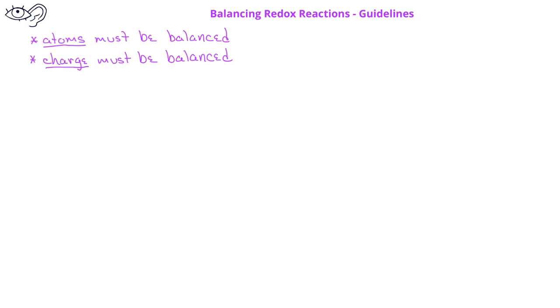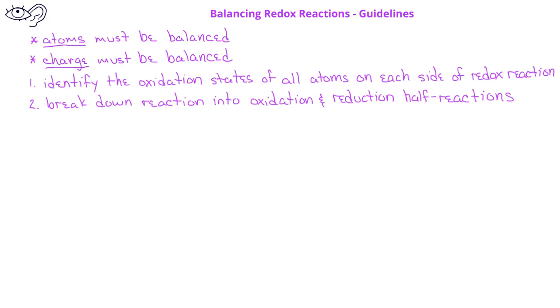When balancing redox reactions, you should begin by identifying the oxidation states of all atoms on each side of the reaction. Second, you should break down the reaction into its two half reactions, one oxidation half reaction and one reduction half reaction.